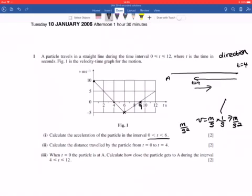So what we're going to do is the gradient of this. We've gone 10 to minus 5, so we've gone minus 15, and we've gone 6 across. So the acceleration, a equals minus 15 over 6 metres per second squared.